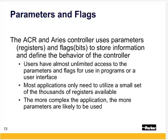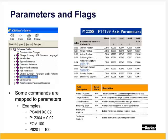The ACR and ARES controller uses parameters, which are registers, and flags, which are bits, to store information and define the behavior of the controller. Users have almost unlimited access to the parameters and flags for use in programs or a user interface. Most applications only need to utilize a small set of the thousands of registers available. The more complex the application, the more parameters are likely to be used. The ACR series are parameter-based controllers, enabling it to be quite powerful with unlimited access.